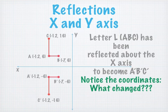Similarly, we can reflect the same letter L over the X axis. The pre-image has the same coordinates for A, B, and C. When reflected over the X axis, it becomes A prime, B prime, and C prime. A prime is negative 12, negative 6; B prime is negative 7, negative 6; and C prime is negative 12, negative 16. Notice the coordinates between the pre-image and the image when you flip it over the X axis — what changes?